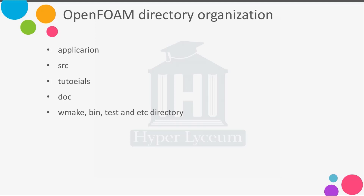I listed here the important directories in OpenFOAM and we're going to explain more about each of them. The application directory is very important — it includes the solvers and also the distributed utilities, and you can use the solvers and utilities across the whole operating system if you compile them. The second is the SRC source code, which includes finite volume discretization, turbulence modeling, thermophysical properties, and dynamic mesh source code. You can find and check the code there.